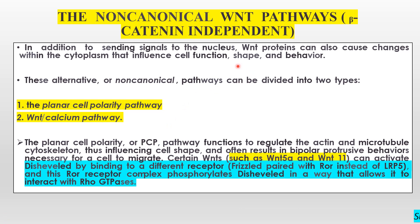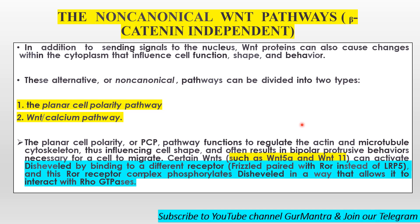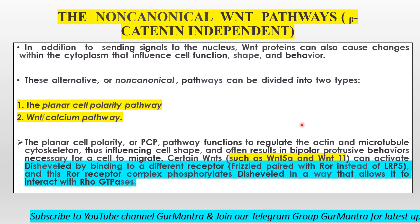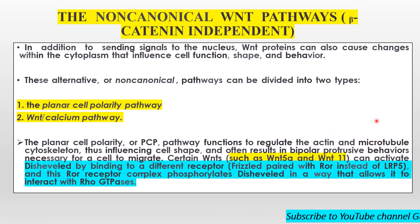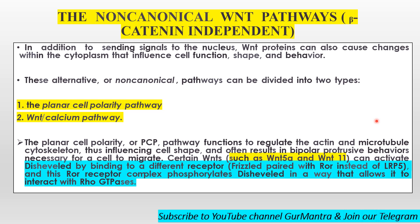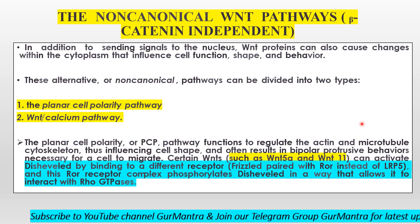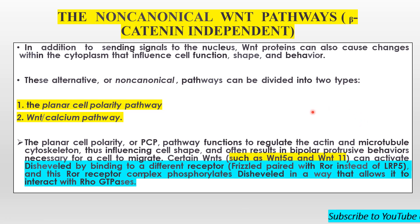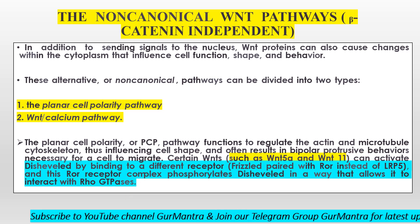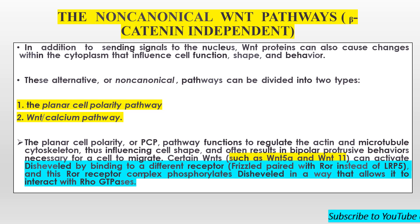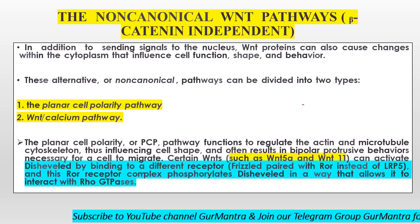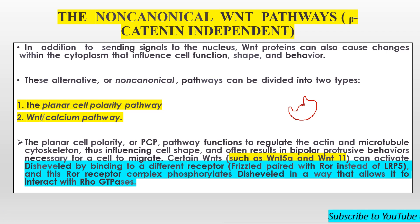If we need to change the shape of a cell, we have to focus on the cytoskeleton framework, in which we see two important things: actin and microtubule cytoskeleton framework. If we regulate these, the cell's shape is also regulated and influenced. Often the result of this pathway is bipolar protrusive behavior, necessary for a cell to migrate. When protrusions form, migration becomes possible.